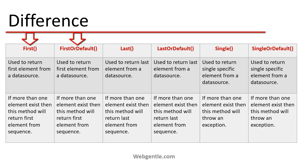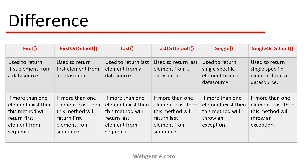I have created this table. You can see we have the First method, FirstOrDefault, Last, LastOrDefault, Single, and SingleOrDefault methods. The First method is used to return the first element from a data source. Similarly, FirstOrDefault is also used to return the first element. The Last method returns the last element from a data source, and LastOrDefault also returns the last element. The Single method is used to return one single specific element from a data source.